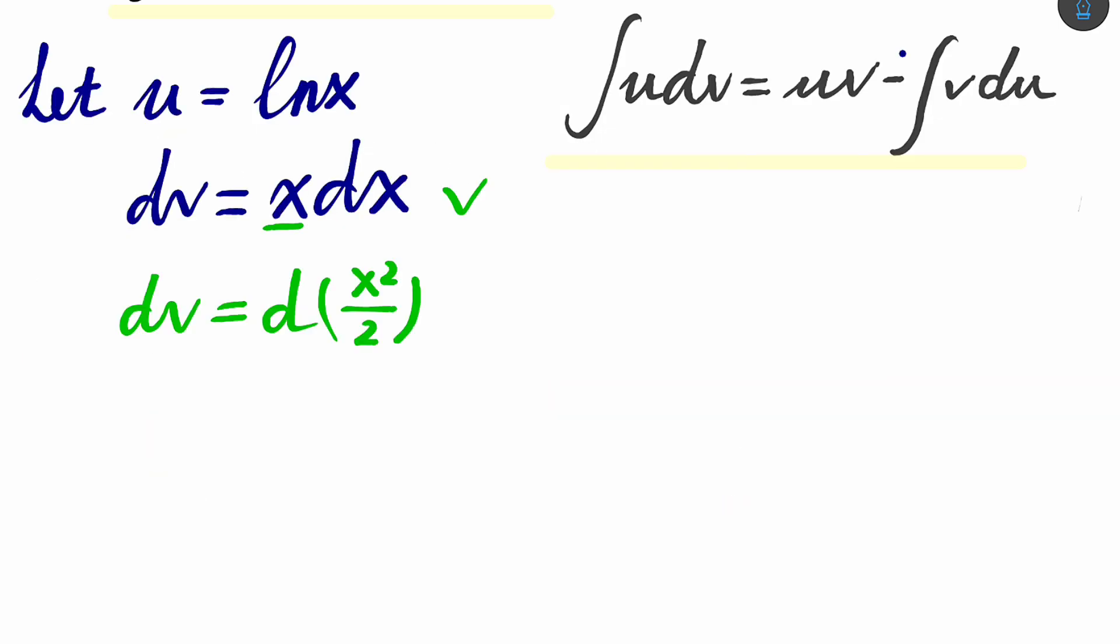So just integrate it. u is ln x, so it's the integral of ln x, then times dv is d x squared divided by 2. Actually, you don't need to put a bracket here. And now our only problem is how can we integrate it?